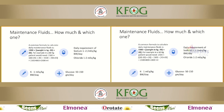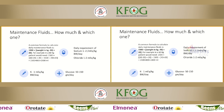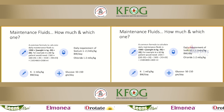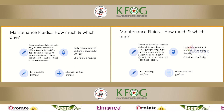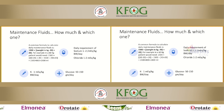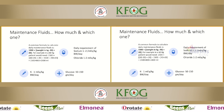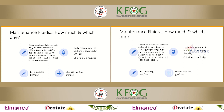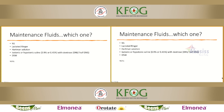A common formula to calculate daily maintenance fluid is: 1500 + (weight in kg − 20) × 20. For a 60 kg woman: 1500 + (60 − 20) × 20 = 2300 mL. Daily sodium requirement is 1–2 mEq/kg/day, chloride similar, potassium about 1 mEq/kg/day, and glucose 50–150 grams/day to prevent starvation ketosis.